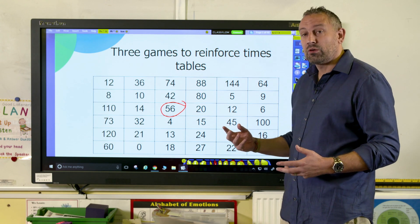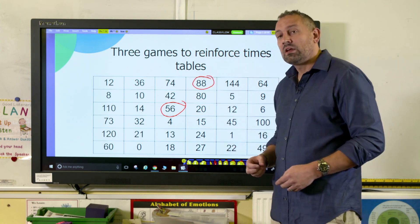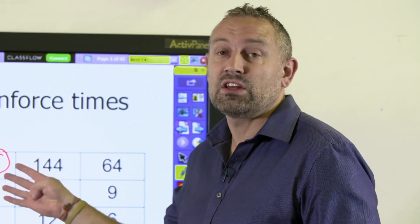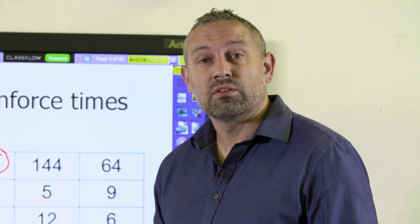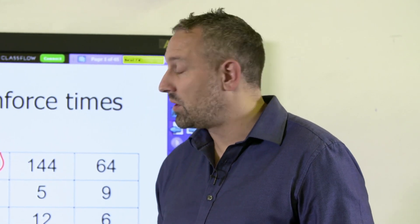Then the next child will have their go and they might circle 88 and they will say 88, 8 times 11, or 44 doubled. It's good that they can use that different language too. And what they've got to try and do is compete against each other to get four in a row.